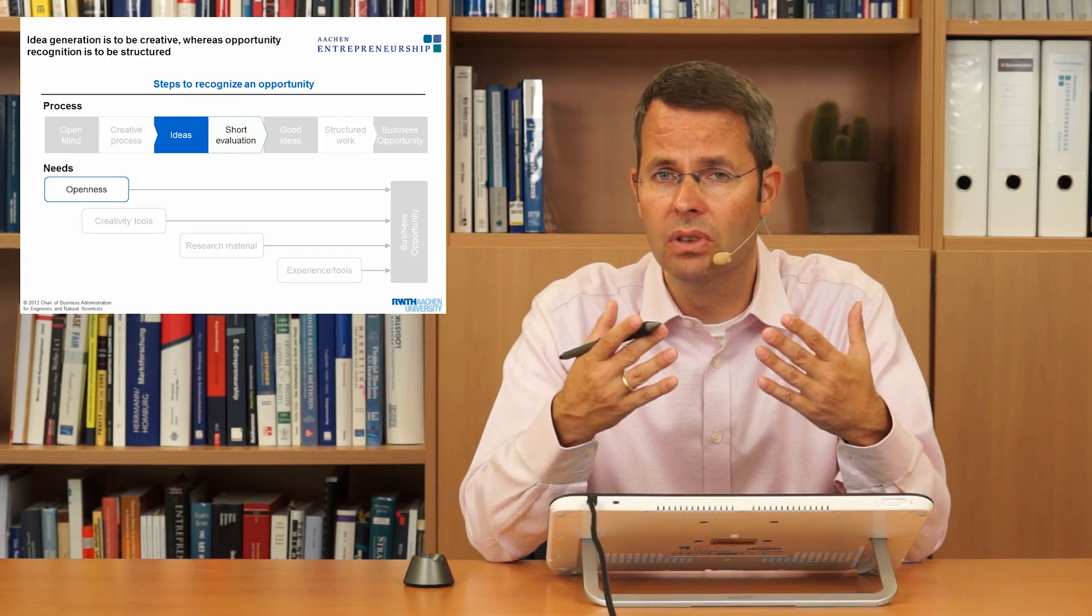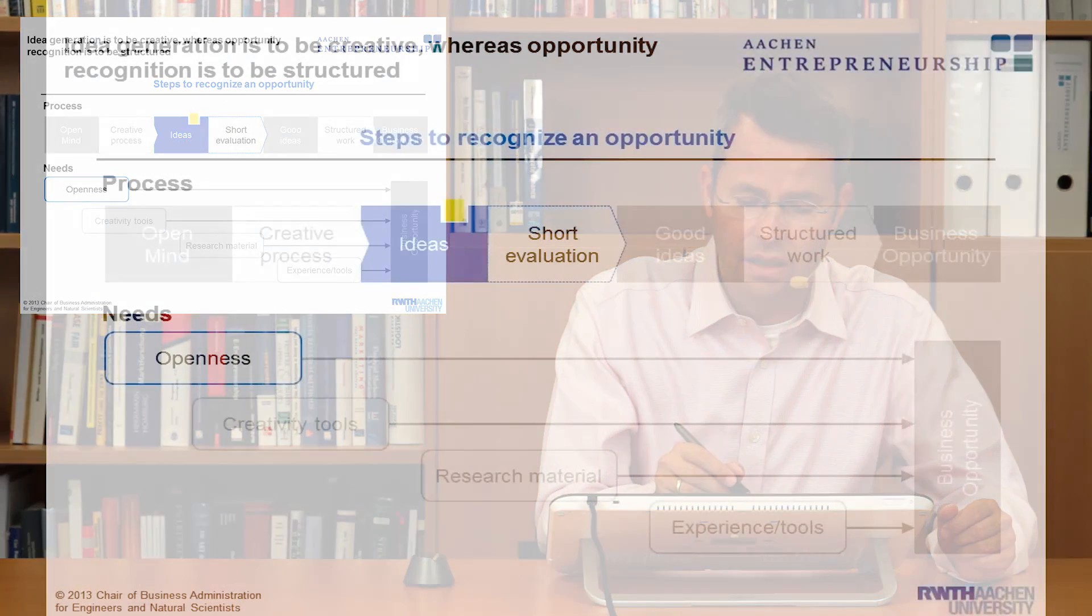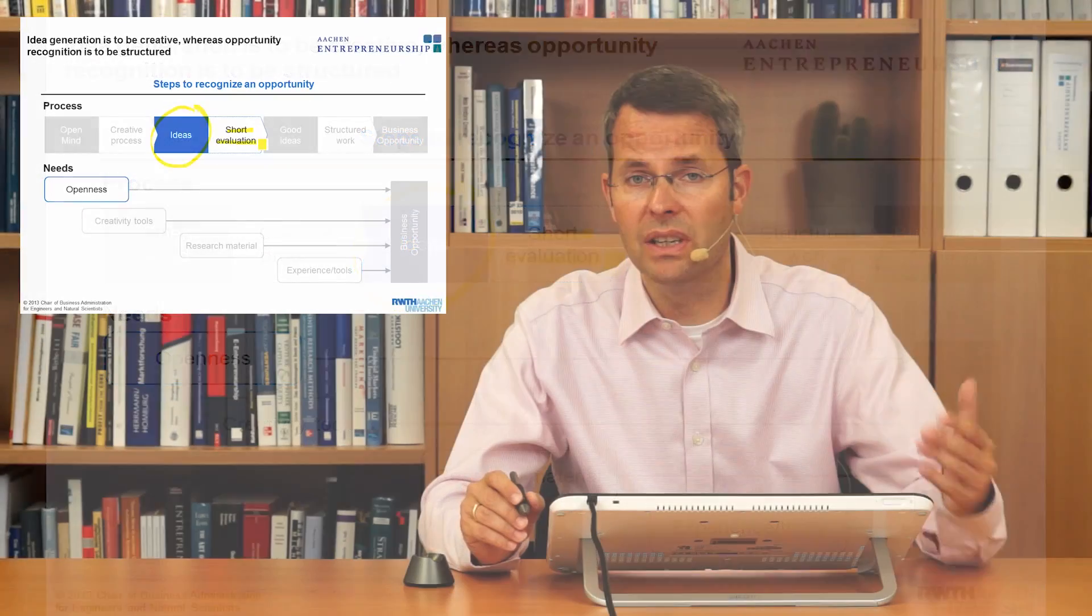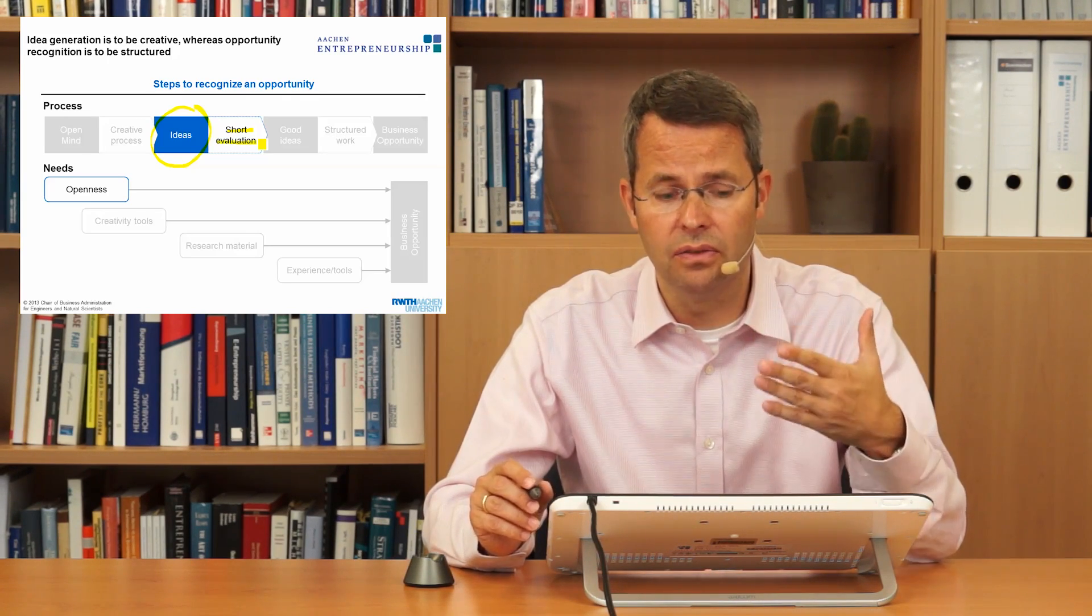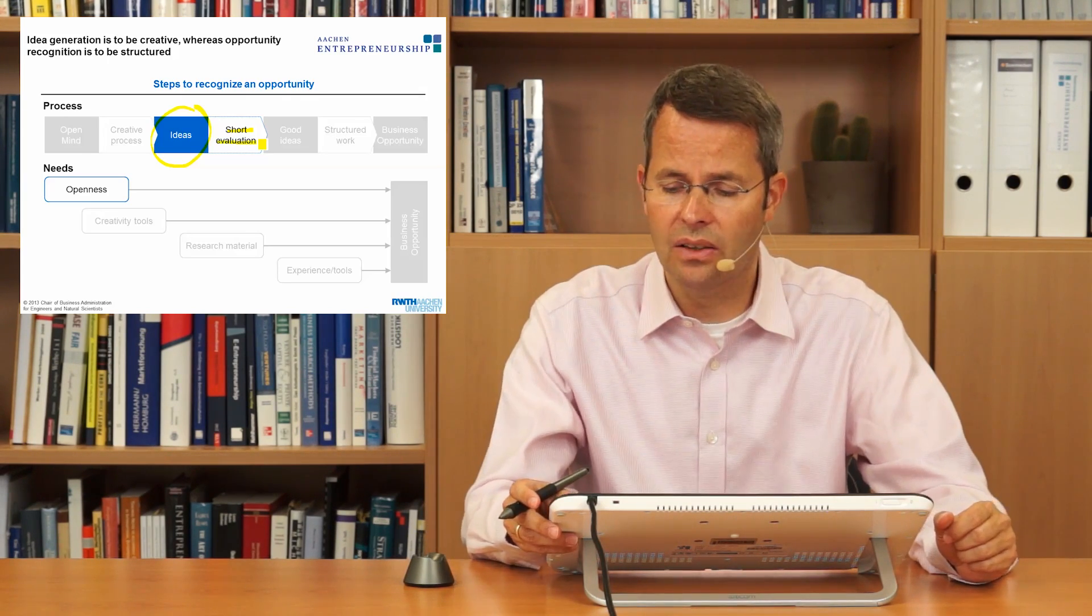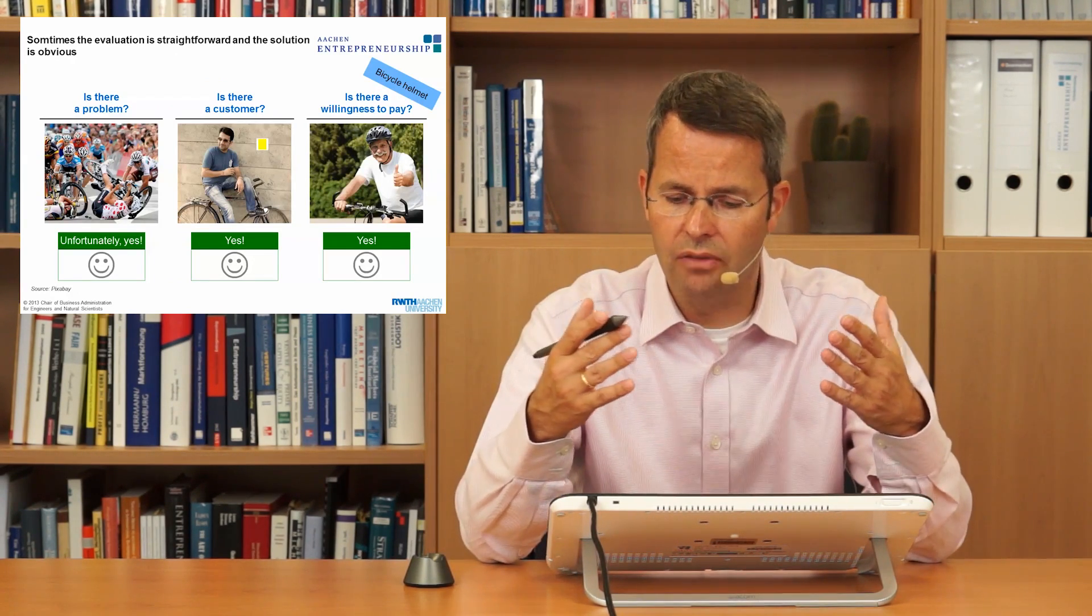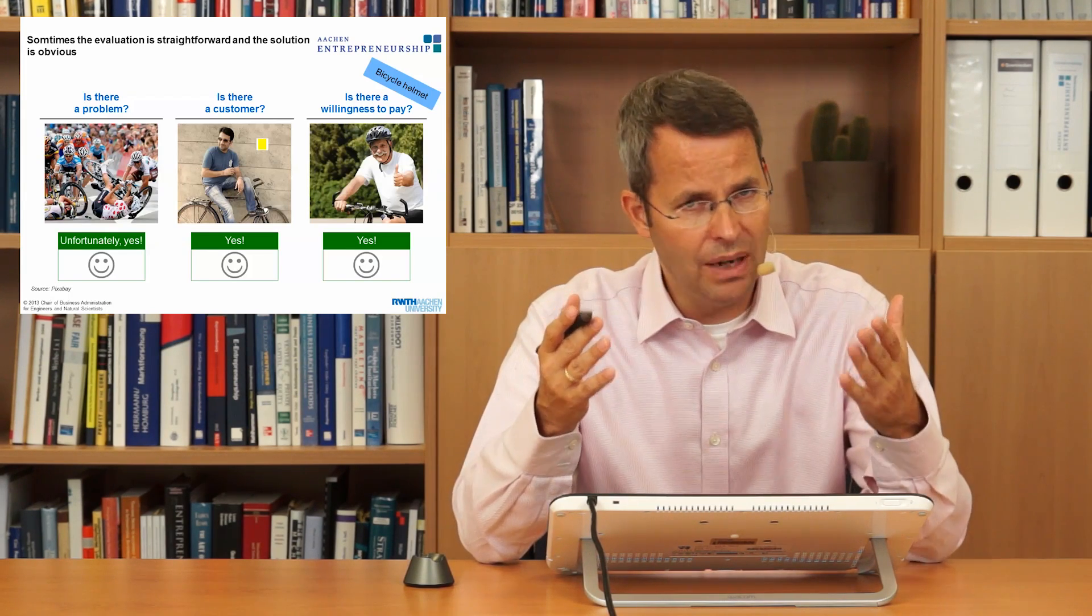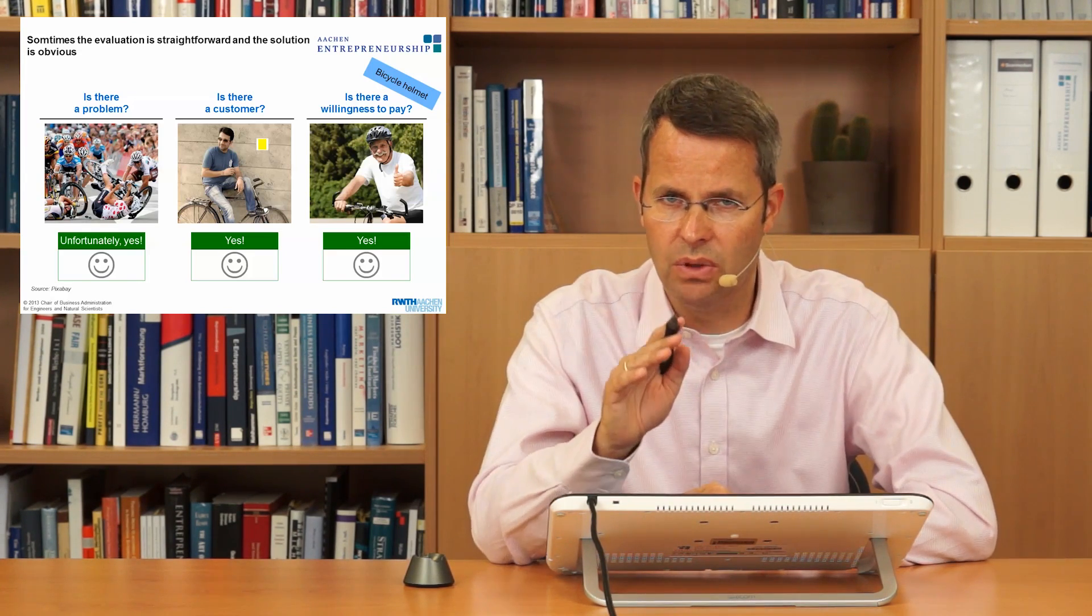Actually, there are many ideas around. So entrepreneurs, serial entrepreneurs, but also those who want to start a business, they make a very short evaluation in order to get a better feeling for the idea. And how does this short evaluation look like? Let's first of all take the example of a bicycle helmet. If you had the idea for a bicycle helmet and you want to do this short evaluation, you basically ask yourself three questions.